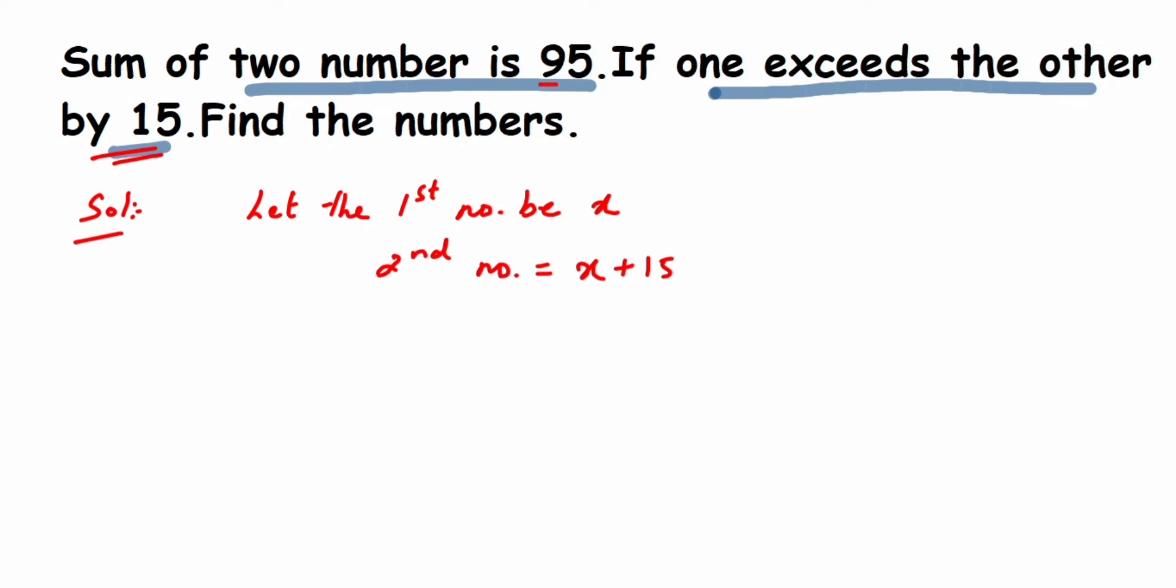Now they have given that if I add these, sum means addition, right? So sum of the two numbers is 95, which means if I add these two numbers I should get 95. So x plus the second number, which is x plus 15, should equal 95. We got a linear equation here.